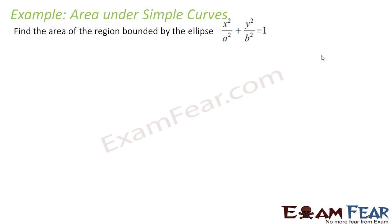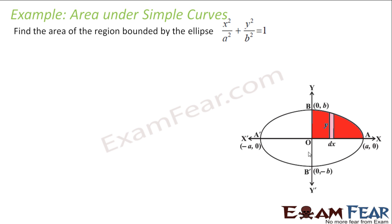Let's do the same thing for the ellipse. We have to find the area bounded by this ellipse: x² / a² + y² / b² = 1. I am solving this for a general equation, so in exams, if you get a specific value of a and b, you can then solve it. So here is my ellipse.